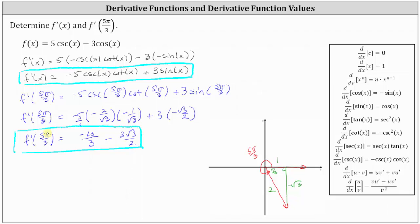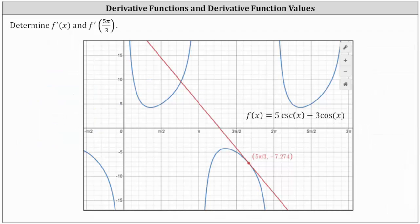This is the slope of the tangent line to the graph of f of x at x equals five pi divided by three. Let's take a look at the graph. In blue we have the graph of the given function. The point where x equals five pi divided by three is the red point shown, and the red line is the tangent line at that point — its slope is the derivative function value we just found. I hope you found this helpful.